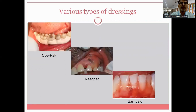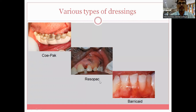These are some pictures of the different types of dressings. Coe-Pak is the most commonly used periodontal dressing. Risopac is quite aesthetic and is a resorbable type, but its duration in the oral cavity is quite limited — it can resolve within a couple of days. Barricade is also quite aesthetic and is used in the anterior areas.